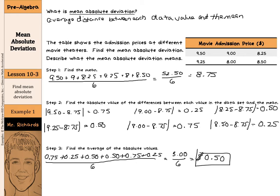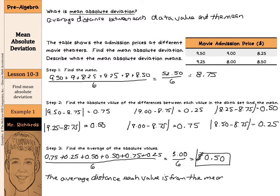What does this mean? The average distance each value is from the mean is 50 cents.